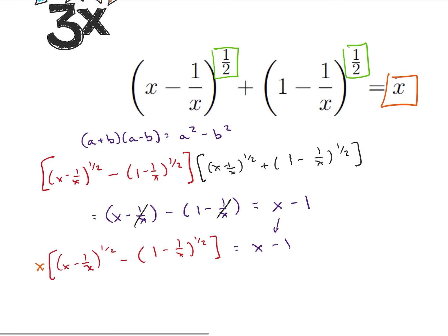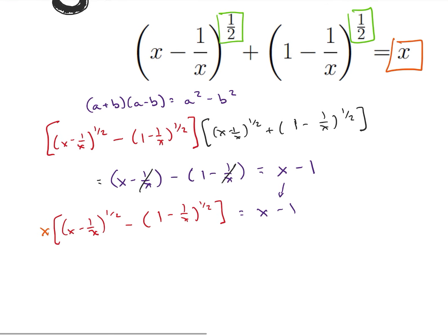So what I notice now is I can rewrite this as x minus 1 over x square root minus 1 minus 1 over x square root is equal to x minus 1 over x. By dividing out that x, which is just equal to 1 minus 1 over x.